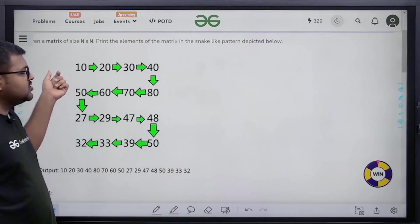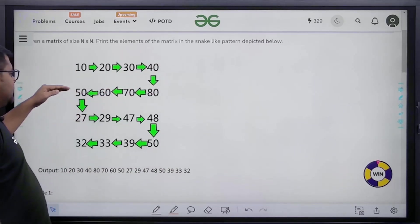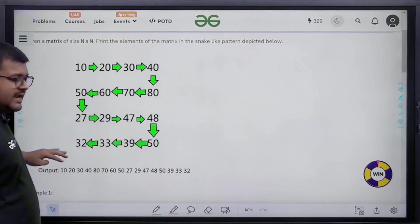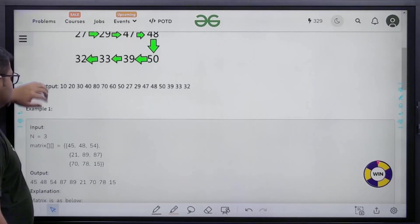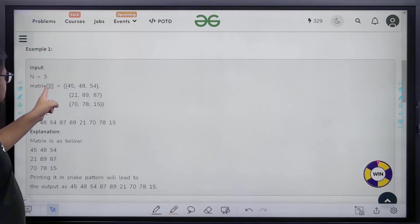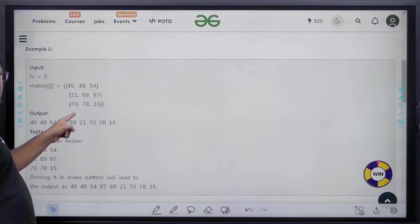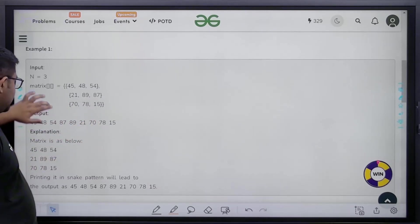Starting from the first row, go on the right side, then come to the left side, then right side, and then left side until we finish the last row. For this example it would be 45, 48, 54, then 87, 89, 21, then 70, 78, 15, and so on.